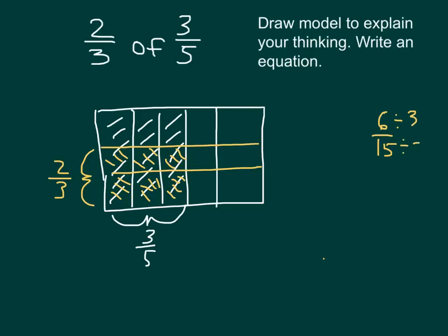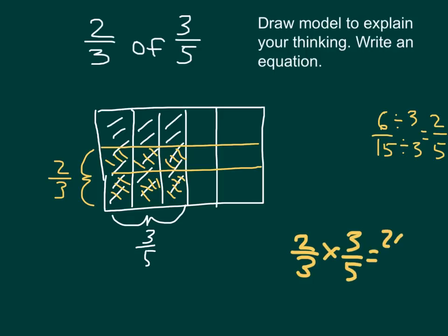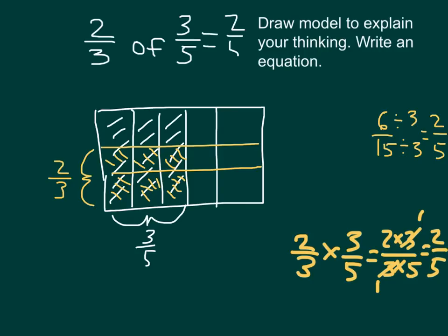If we reduce that, we get two-fifths. It does say to write an equation as well. So two-thirds of three-fifths would be two-thirds times three-fifths, which is equal to two times three over three times five. We can cancel the threes, which will become ones, so we are left with two-fifths. Two-thirds of three-fifths does equal two-fifths. We explained it not only with a model that was properly labeled, but also with an equation.